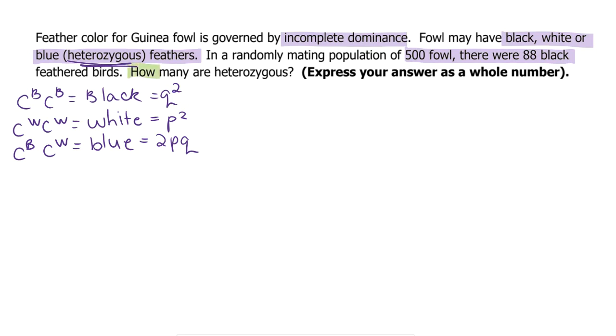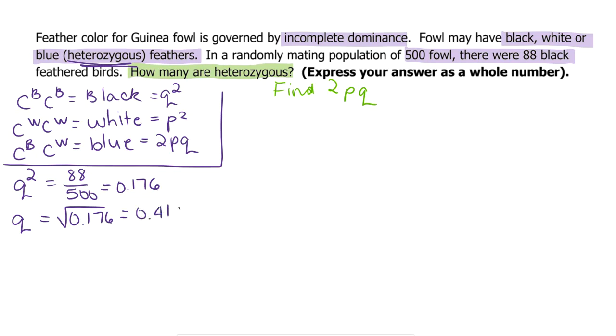Now we're trying to find how many are heterozygous. So we are looking to find 2PQ. Let's start with our Q squared value. It is 88 out of 500, which is 0.176. Then we can find Q, which is the square root of Q squared, and that is 0.4195.